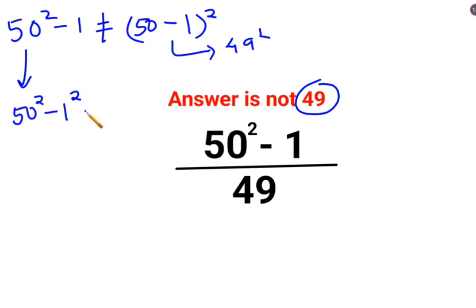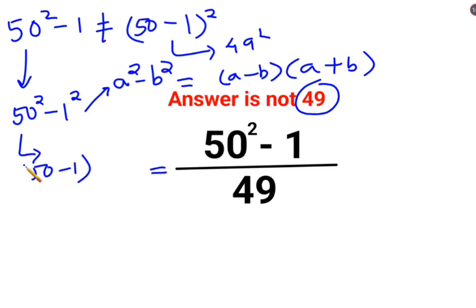Whose expansion is a minus b multiplied by a plus b. So here, expansion of 50 square minus 1 square, we can write it as 50 minus 1 into 50 plus 1 upon 49.